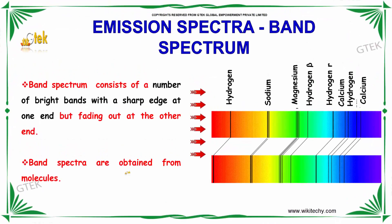If we talk about band spectra, a band spectrum consists of a number of bright bands with a sharp edge at one end but fading out at the other. Band spectra are obtained from molecules. You are able to see spectra of hydrogen, sodium, magnesium, hydrogen beta, hydrogen R, calcium, and other elements displayed here.